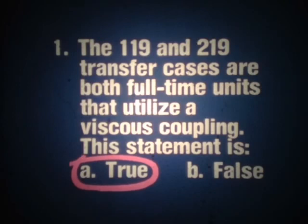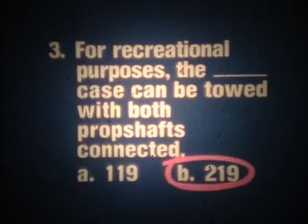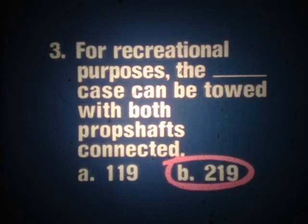The answer to number one is true — both transfer cases are full-time units and utilize a viscous coupling. Number two is false — the 219 is available on Jeep vehicles only; the 119 is the only case used in Eagles. The answer to number three is B, the 219. Jeep vehicles equipped with the 219 are capable of being towed with both prop shafts connected, but the transfer case must be in neutral and the transmission must be in park. Eagles equipped with the 119 can be towed for long distances, but both prop shafts must be disconnected.